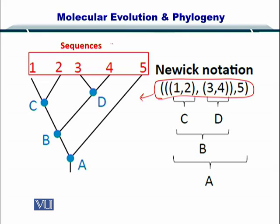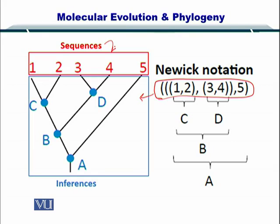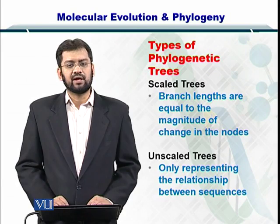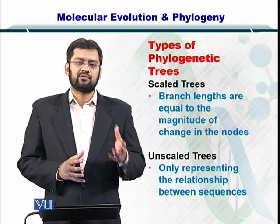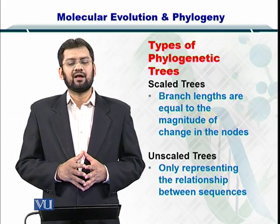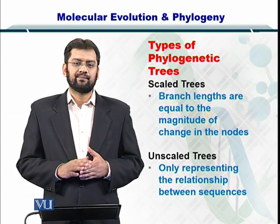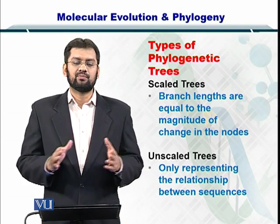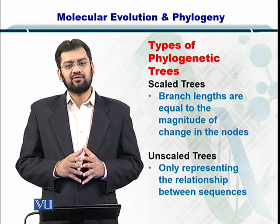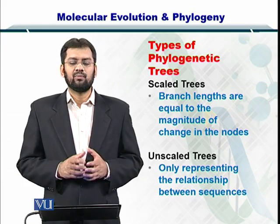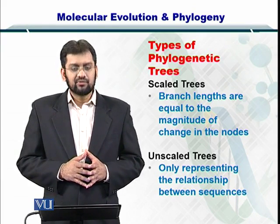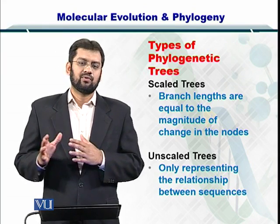Moreover, the sequences are placed at the top and these internal nodes are inferred. We need to find these nodes in order to create the tree. There are basically two types of phylogenetic trees: scaled trees and unscaled trees. In scaled trees, the edges or branch length represents the difference or distance between the two sequences, while in unscaled trees that is not the case. The unscaled trees are only representative of the relationship.